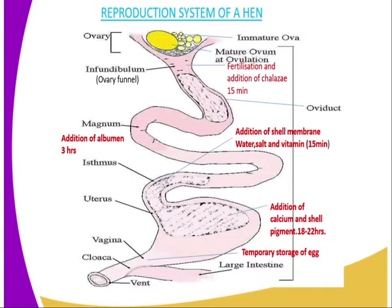At the uterus, there is addition of calcium and shell pigment. Remember, there are eggs which have a white color and others which have a brown color — that pigment is added at the uterus. The egg then proceeds to the vagina.